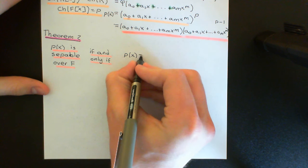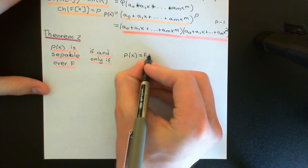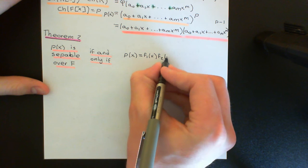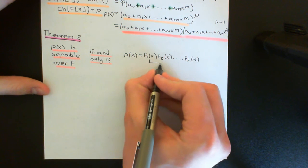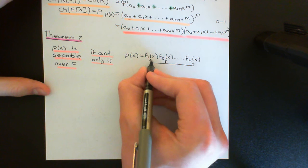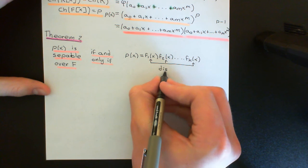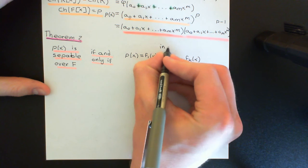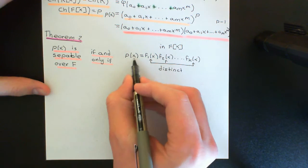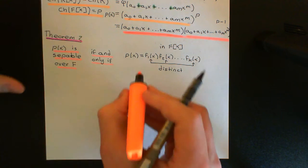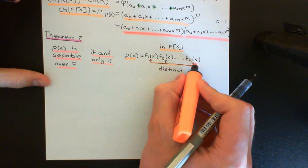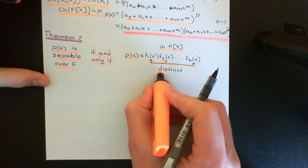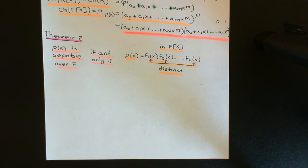So we can write P(X) as a product F₁(X) · F₂(X) · … · Fₖ(X), and the condition is that all of these irreducible factors F₁(X) through Fₖ(X) are distinct. We know factorisation into irreducibles is unique in a ring of polynomials over a field — it's a unique factorisation domain — so this polynomial has one and only one irreducible factorisation, up to choice of associate.